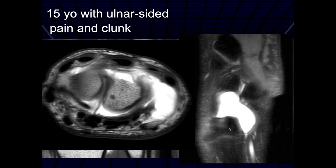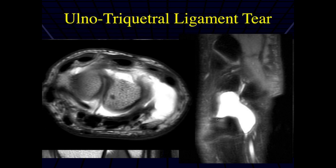The TFCC itself — I didn't see a discrete TFCC tear. That's right — the TFCC was okay. Here's the dorsal ulnar triquetral ligament right through here and we don't see it well. This was an ulnar triquetral ligament tear, which led to instability and the clunk that the patient had.